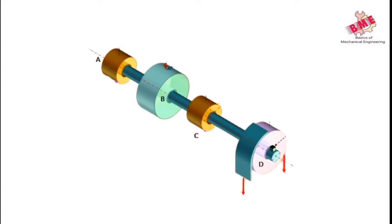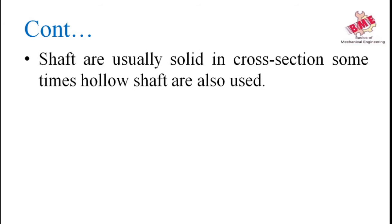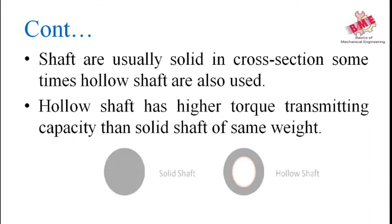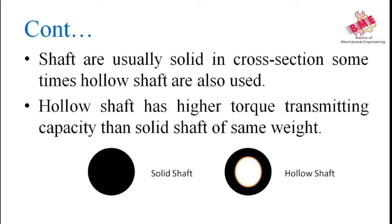Hence, both bending and torsional shear stresses are induced in the shaft. Shafts are usually solid in cross-section, but sometimes hollow shafts are also used. Hollow shafts have higher torque transmitting capacity and higher torsional as well as lateral rigidity than a solid shaft of the same weight. Hollow shafts are also lighter in weight than solid shafts for the same torque transmitting capacity.